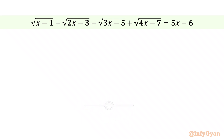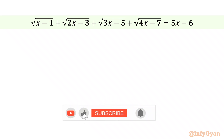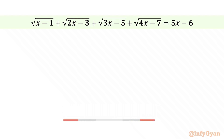Welcome to InfiJaan. Today in this video we have one very interesting question from the Chinese Math Olympiad: square root of (x minus 1) plus square root of (2x minus 3) plus square root of (3x minus 5) plus square root of (4x minus 7) equals (5x minus 6). We are going to calculate all real solutions.